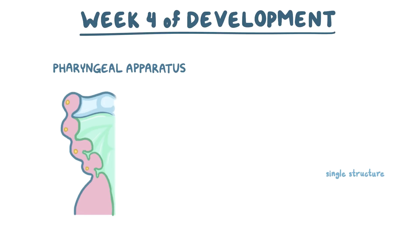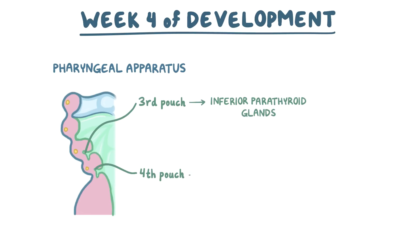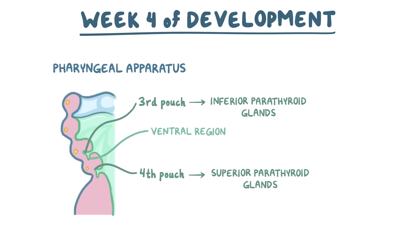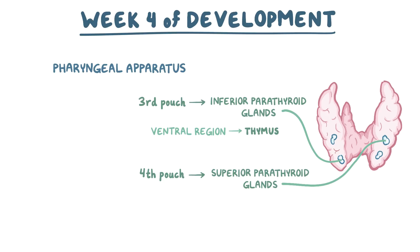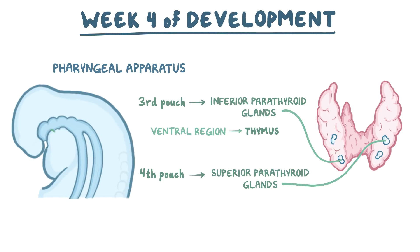The epithelial tissue of the embryo's third and fourth pouch turns into the inferior parathyroid glands, as well as the superior parathyroid glands, while the epithelial tissue that lines the ventral regions of the third pouch forms the thymus. Both glands then break off from the pharyngeal wall and eventually attach to the posterior side of the thyroid. The thymus, now free, migrates down the middle of the pharynx until it ends up in its final position in the front of the thorax, where it fuses with its counterpart from the opposite side.